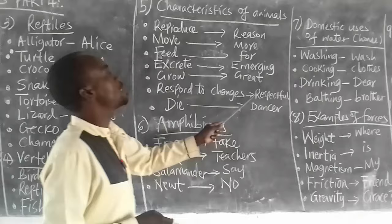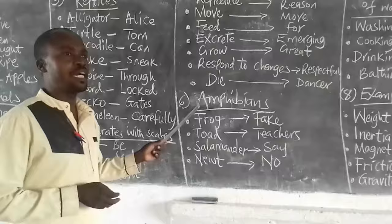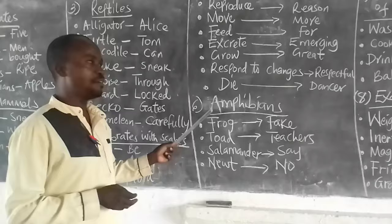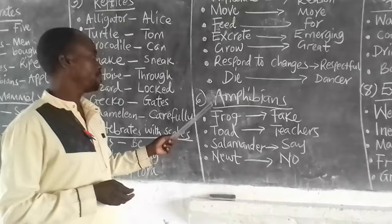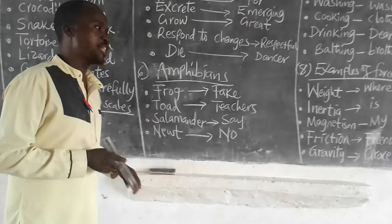Amphibians. These are vertebrates that live partly in water and partly on land. They have moist skin, they do not have scales. They include frog, toad, salamander, newt. Mnemonic: fake teachers say no.